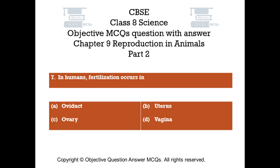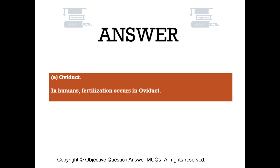Question number 7. In humans, fertilization occurs in. Option A: Oviduct. Option B: Uterus. Option C: Ovary. Option D: Vagina. The right answer is Option A: Oviduct. In humans, fertilization occurs in the oviduct.